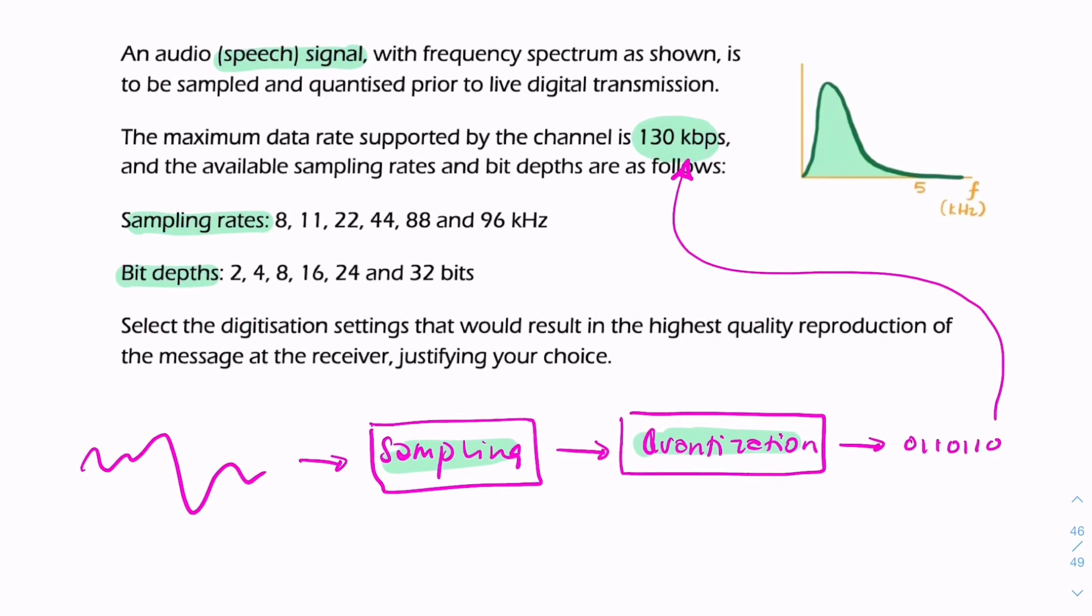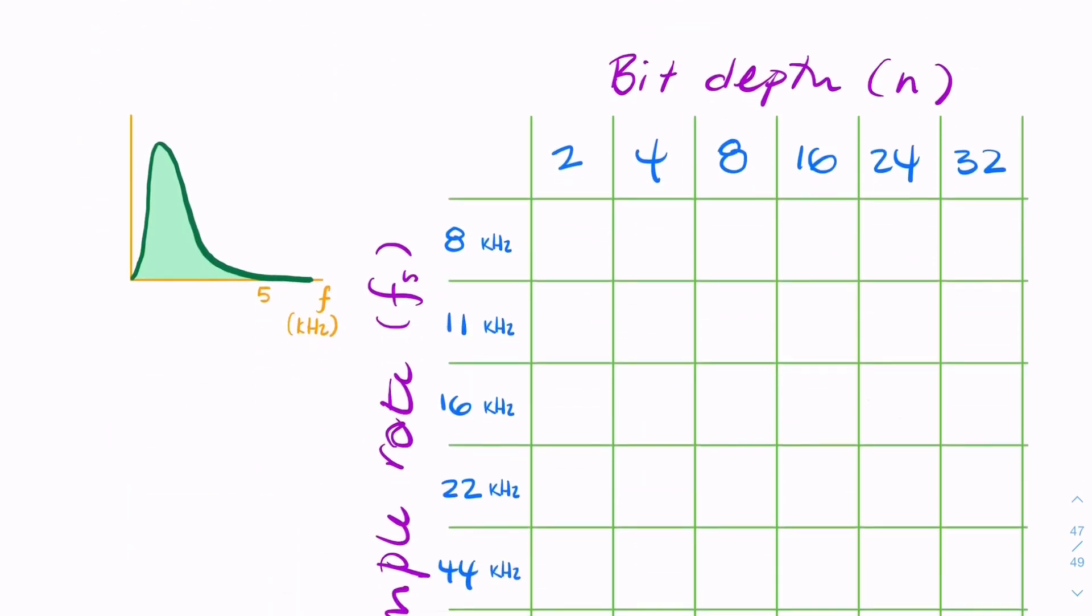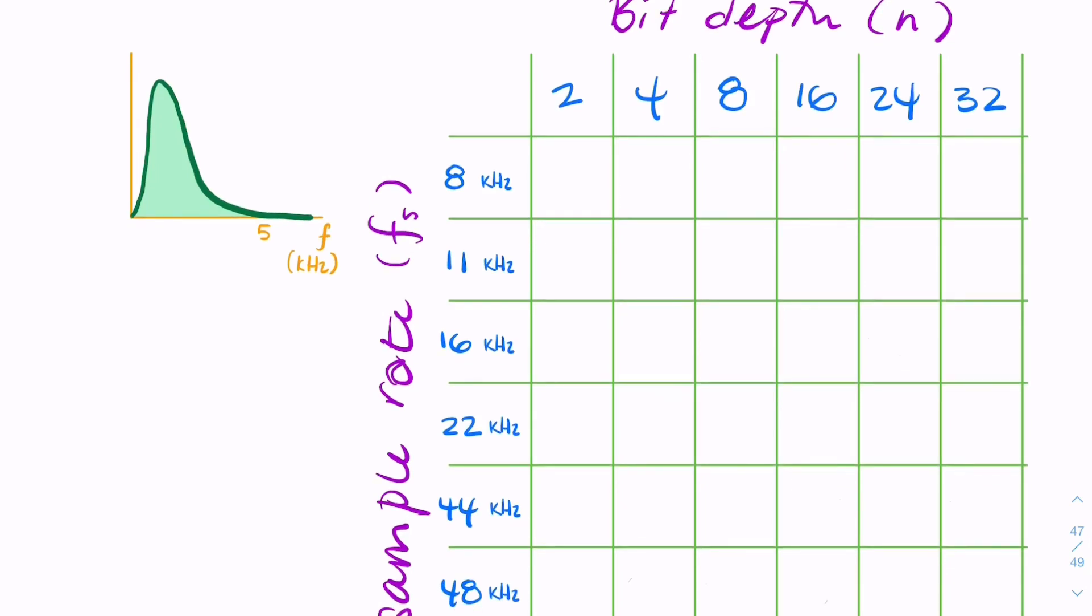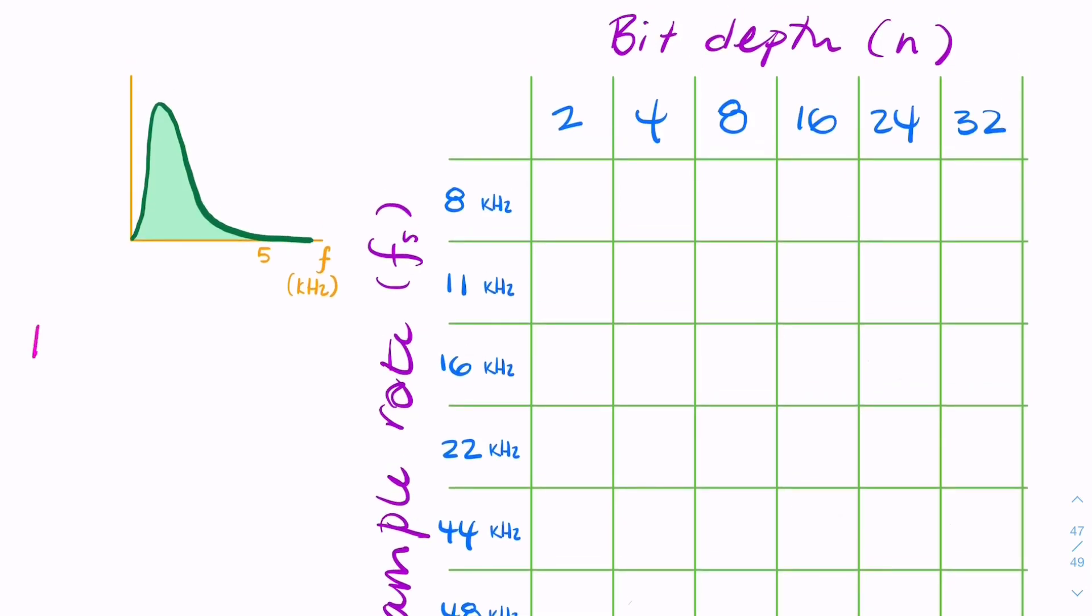So how would we choose these two numbers? You need to remember that the bit rate is the product of these two numbers: the sample rate and the bit depth. We can write that out - I've created a little table here. We can say the bit rate equals the bit depth times the sampling rate. That's how many bits are being generated every second.